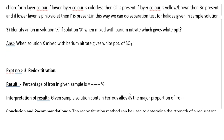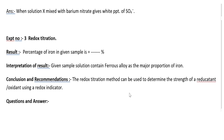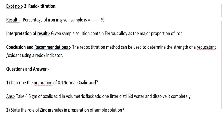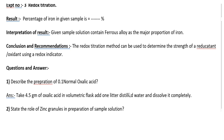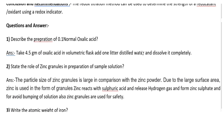Now, experiment number 3: how to write down the result. The percentage of iron in the given sample must naturally be less than 100%. Interpretation of result: the given sample solution contains ferrous alloy as a major proportion of iron. Conclusion and recommendation are also given. Now let us see the question and answer.